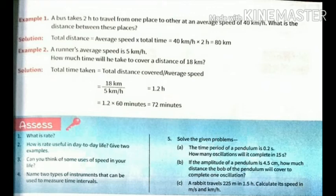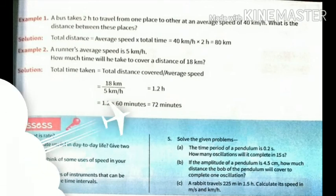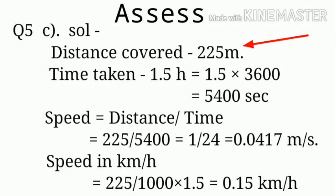Part C I am explaining in this video. Question number 5 part C: a rabbit travels 225 meter distance in 1.5 hours, and we have to calculate the speed in meter per second and kilometer per hour. Distance and time are given to us. First of all, we write the distance covered by the rabbit, that is 225 meters. Then we write the time taken, that is 1.5 hours. So we first convert hours to seconds: 1.5 multiplied by 3600 equals 5400 seconds. Then we know the formula: speed equals distance upon time, so 225 divided by 5400 equals 0.0417 meter per second.